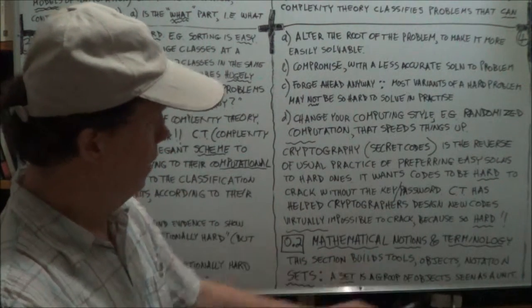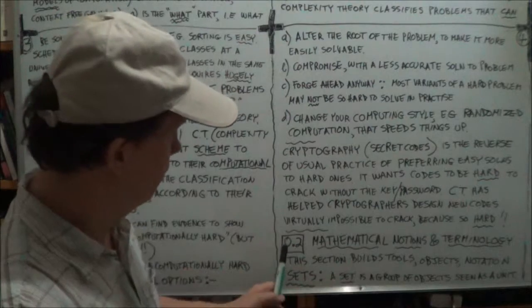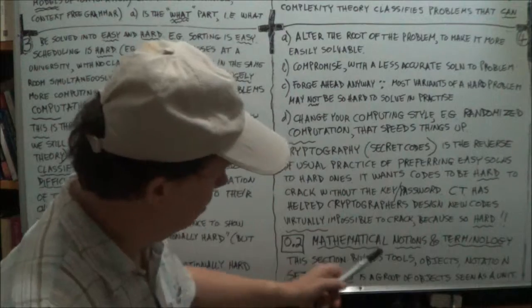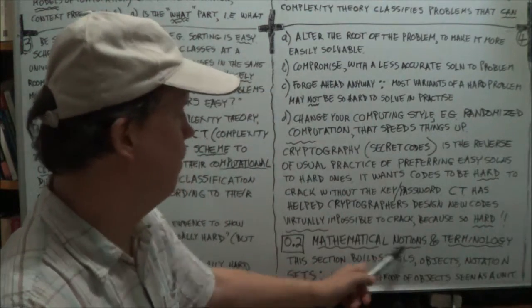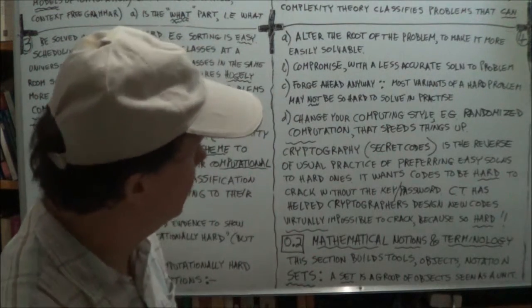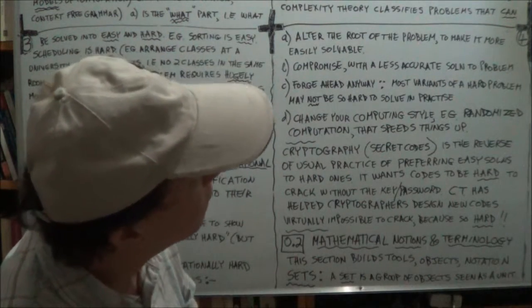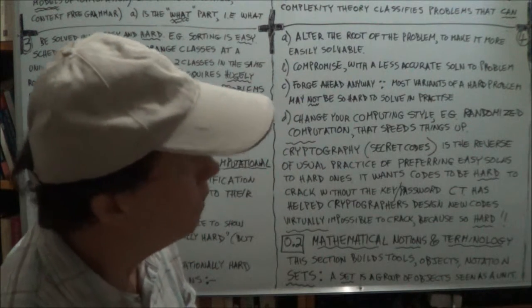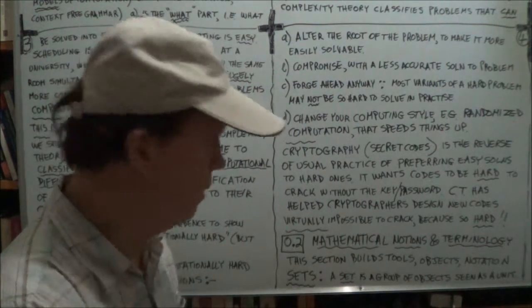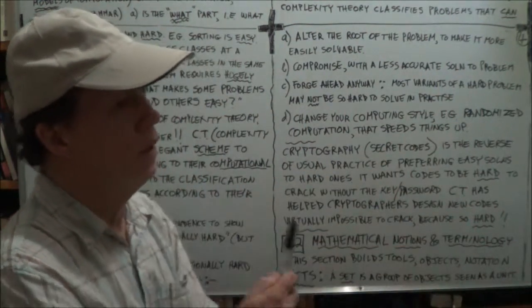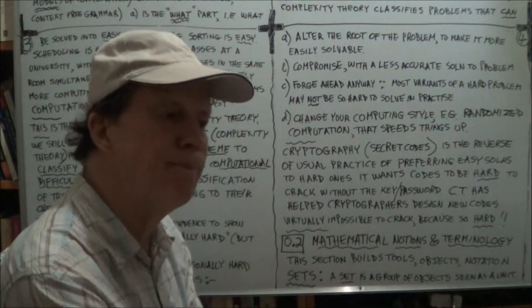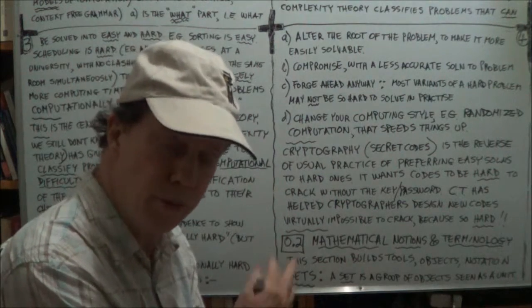This is 0.2, the second block of chapter 0, on mathematical notations and terminology - certain notions, basic mathematical tools. We will start with sets and sequences and tuples.